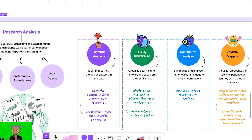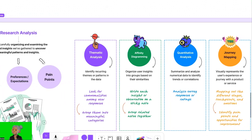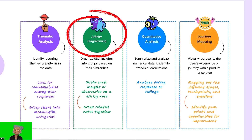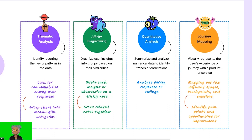There are various methods and techniques for conducting research analysis. Let's explore some of them. First, thematic analysis — this approach involves identifying recurring themes or patterns in the data. You look for commonalities among user responses and group them into meaningful categories. For example, if multiple users mention the need for a user-friendly interface, you would create a theme around ease of use.